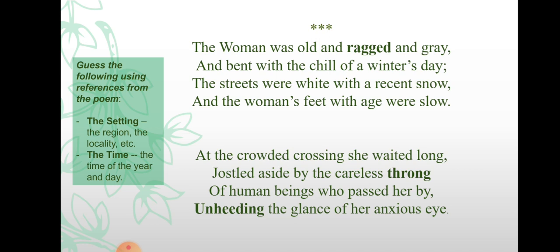The poetess Mary Dobrine starts with the description of an old woman. She says that the woman was old, wearing old and torn clothes — 'ragged' means wearing old and torn clothes — and her hair was grey due to old age.